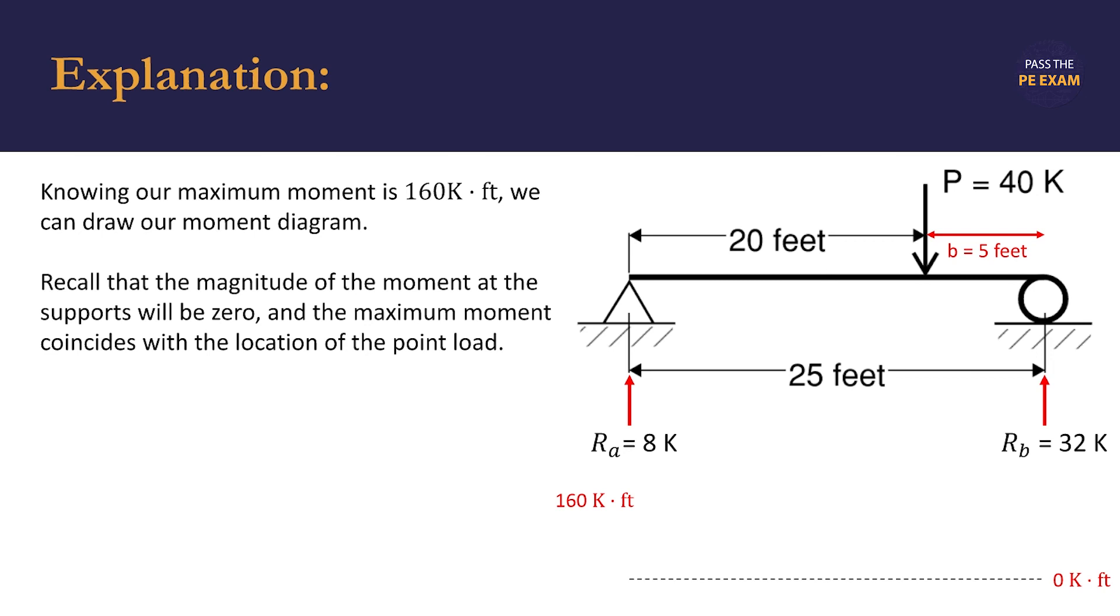Just like the shear diagram, we'll draw this directly underneath the force diagram. On paper, you'd draw this beneath the shear diagram. We start by drawing a line connecting support A, where the moment is zero, to a point directly underneath point load P, where the maximum moment of 160 kip-feet occurs.